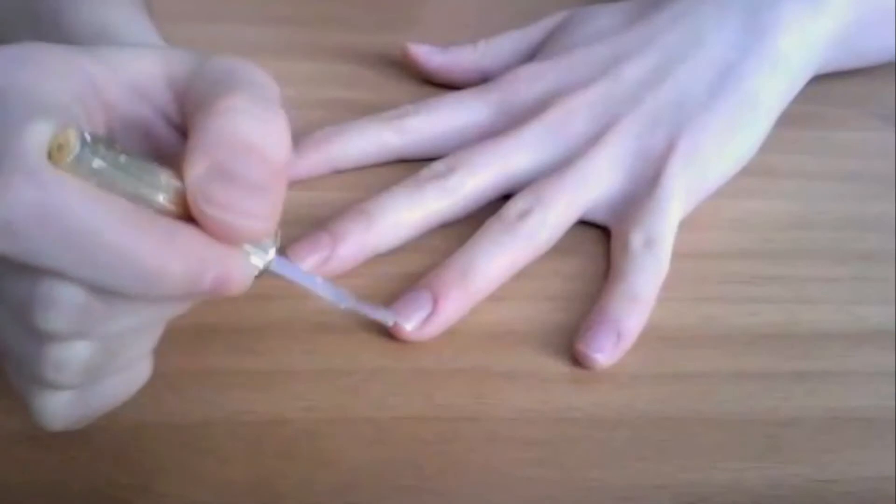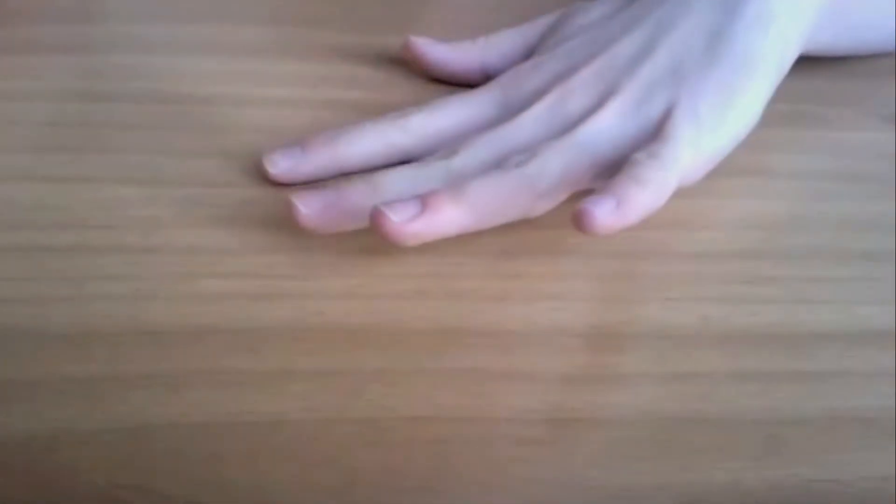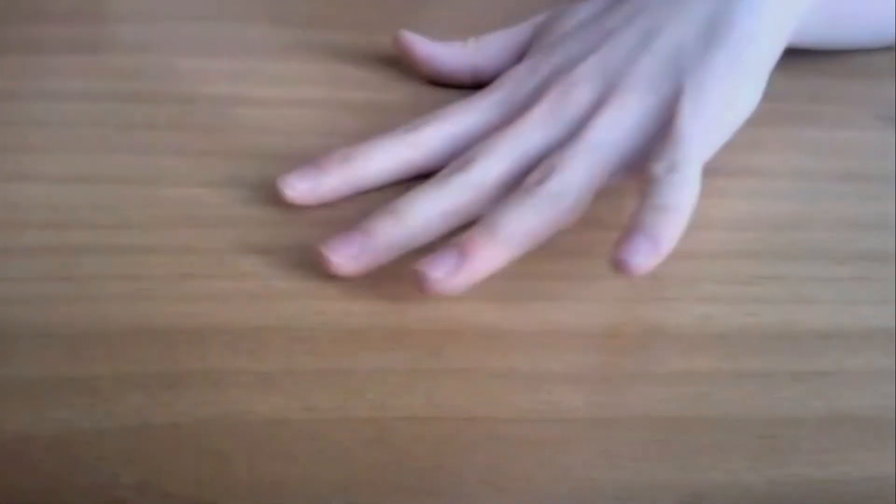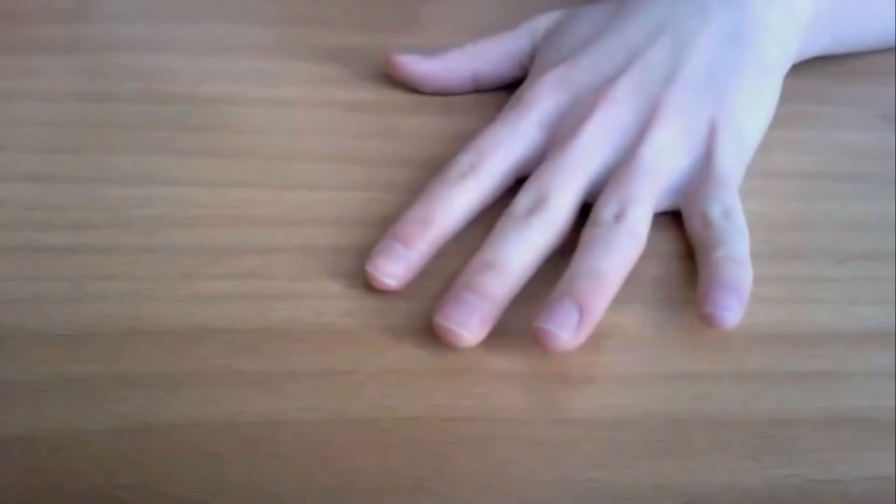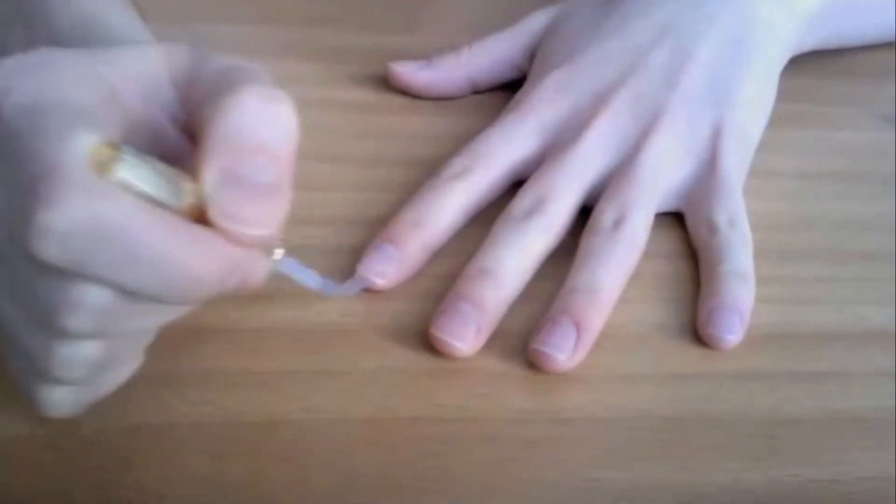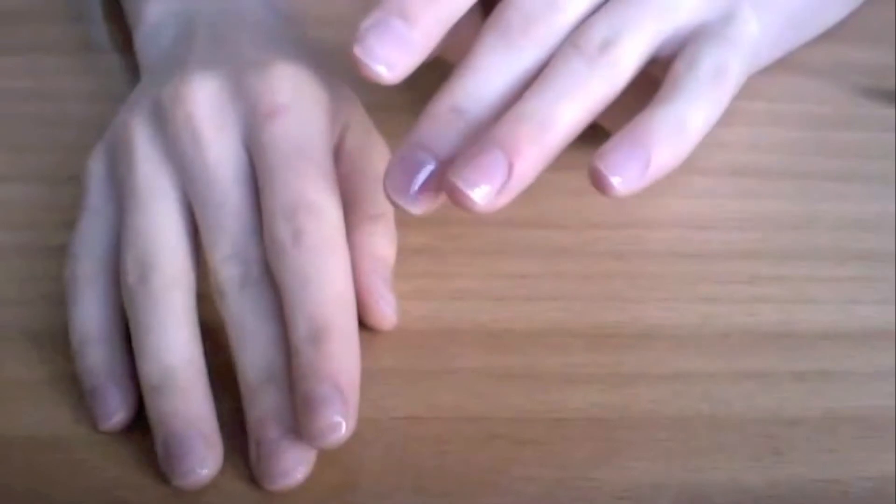This is the last step of my nail whitening routine. After the treatment, I like to apply a nail brightening polish. This polish is clear but has special properties that make your nails appear really clean, healthy, and bright.